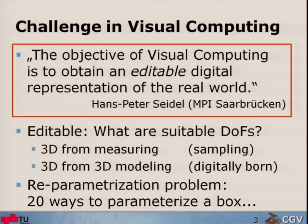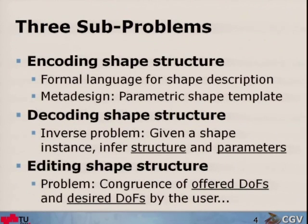We have 3D for measurements, 3D for modeling, all kinds of 3D. The big problem is how can we parameterize this stuff — there are already 20 ways to parameterize something as simple as a box. I would like to phrase this in three sub-problems: encoding shape structure, decoding shape structure, and then editing shape structure.